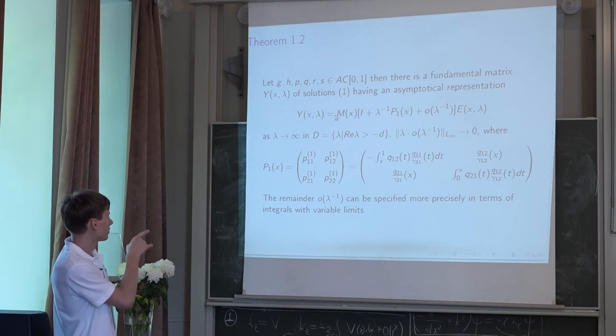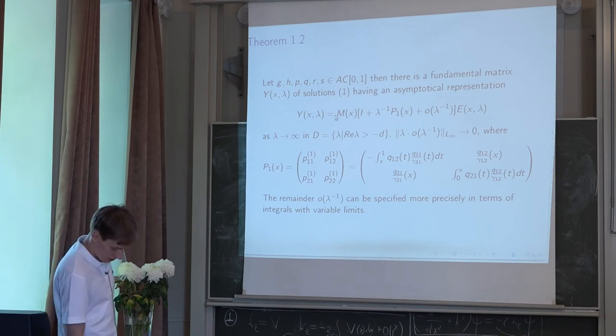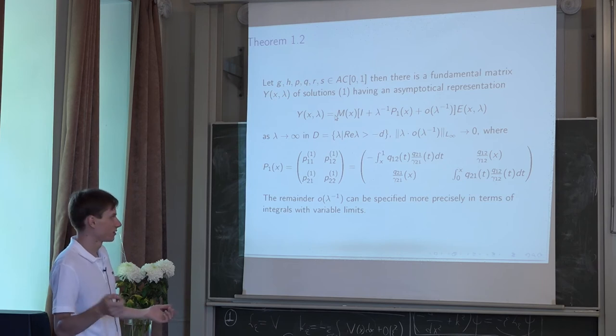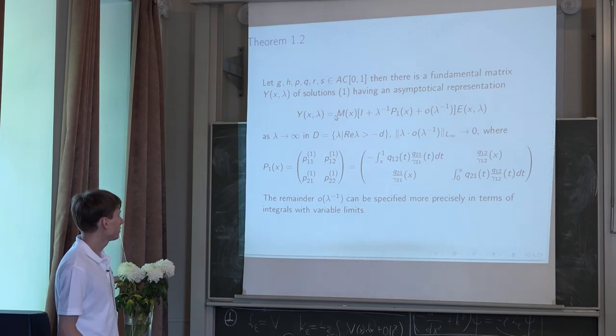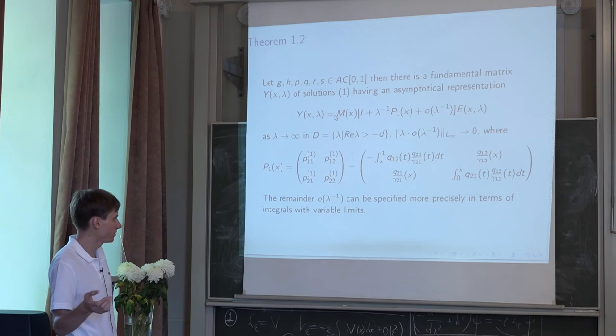You can see it here. All coefficients, q's and gammas, are explicitly expressed from coefficients of the equation and have the smoothness equal to the initial coefficients of the systems.